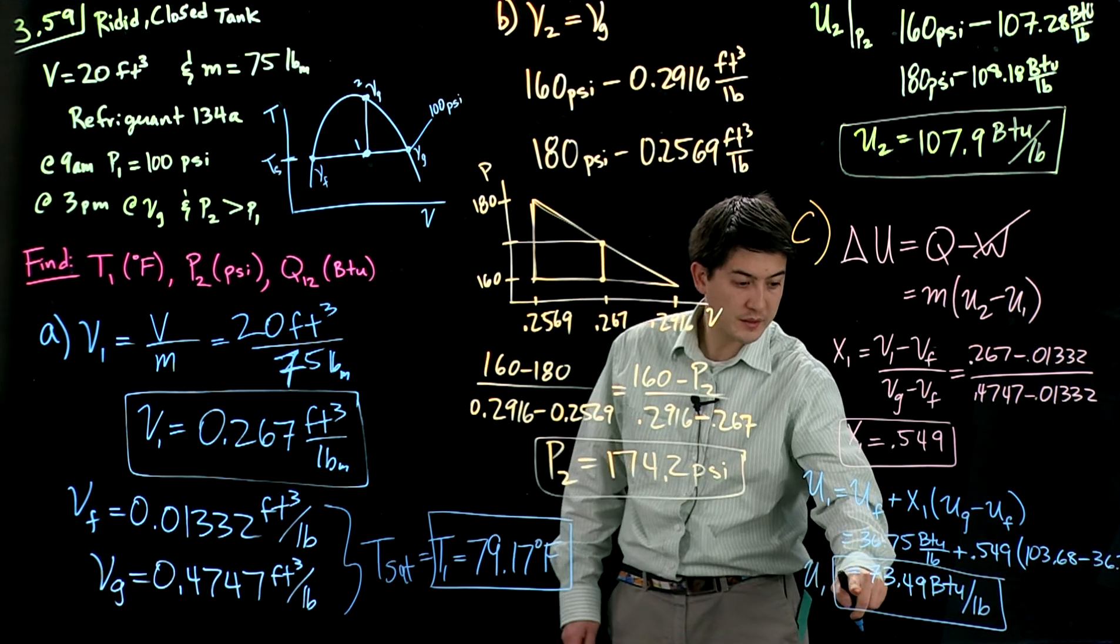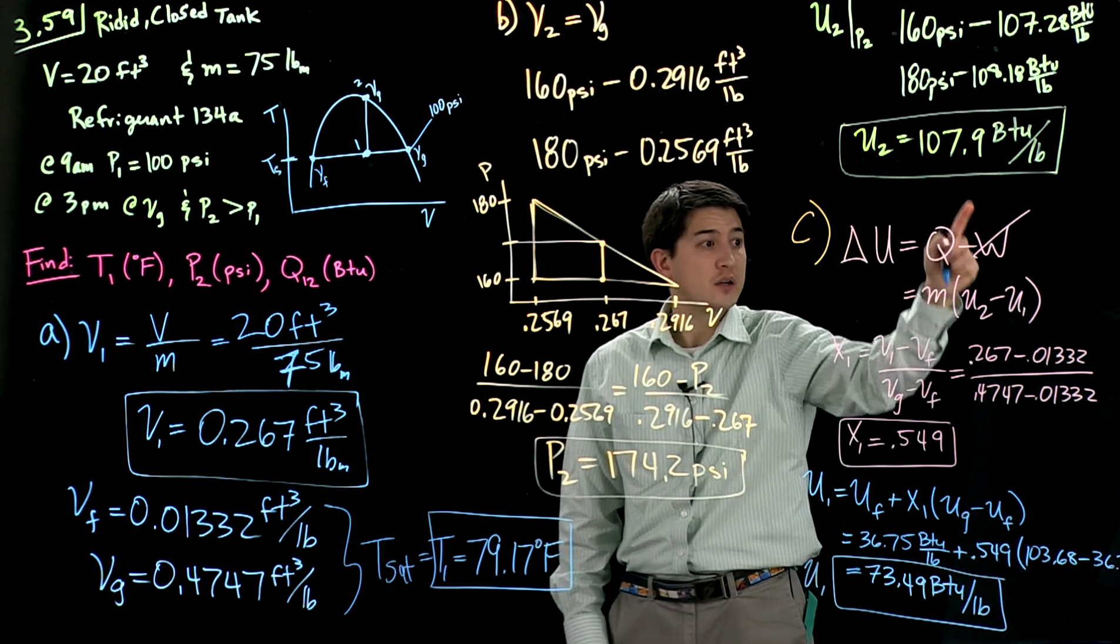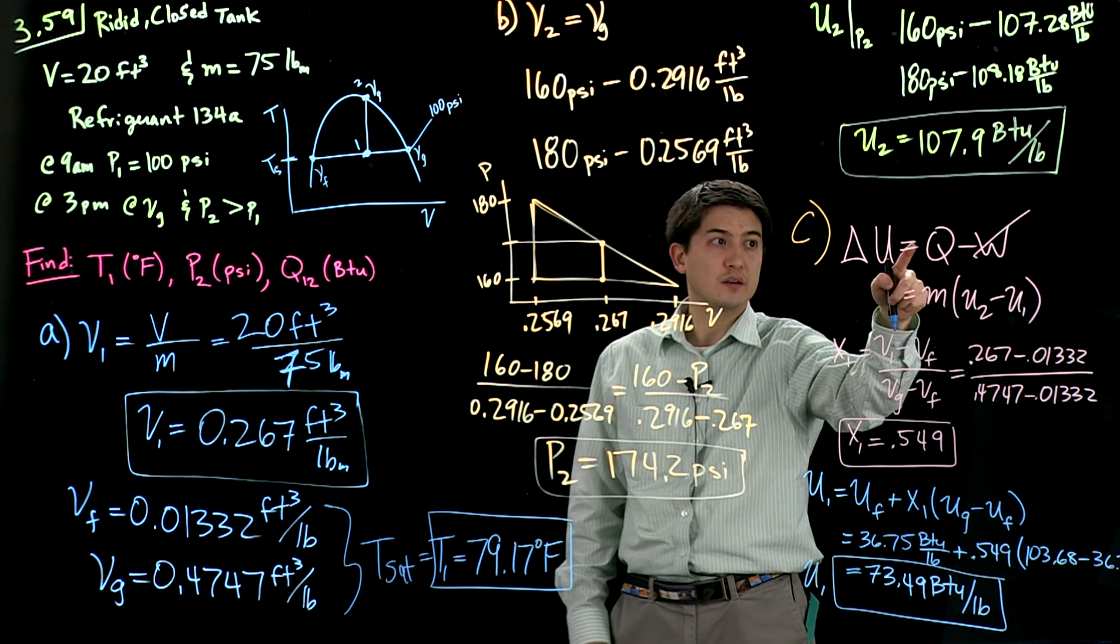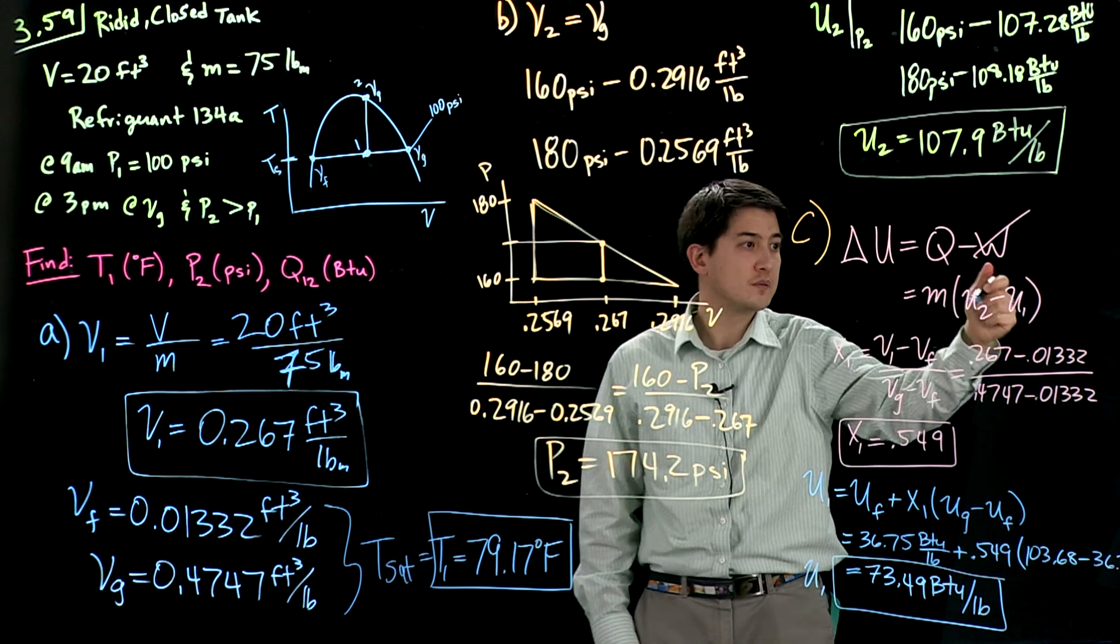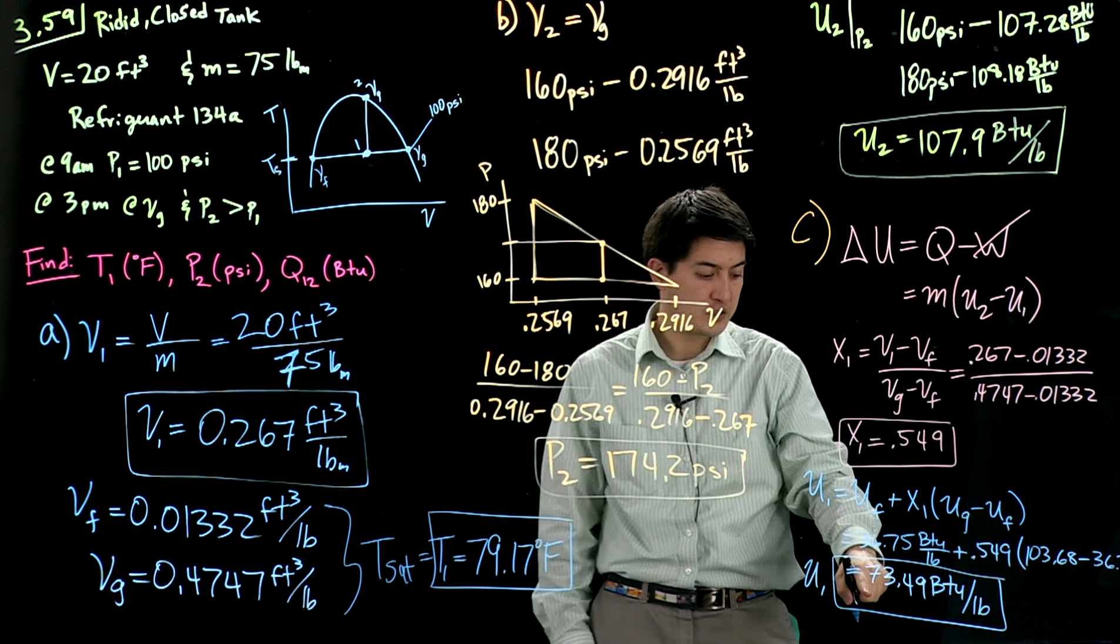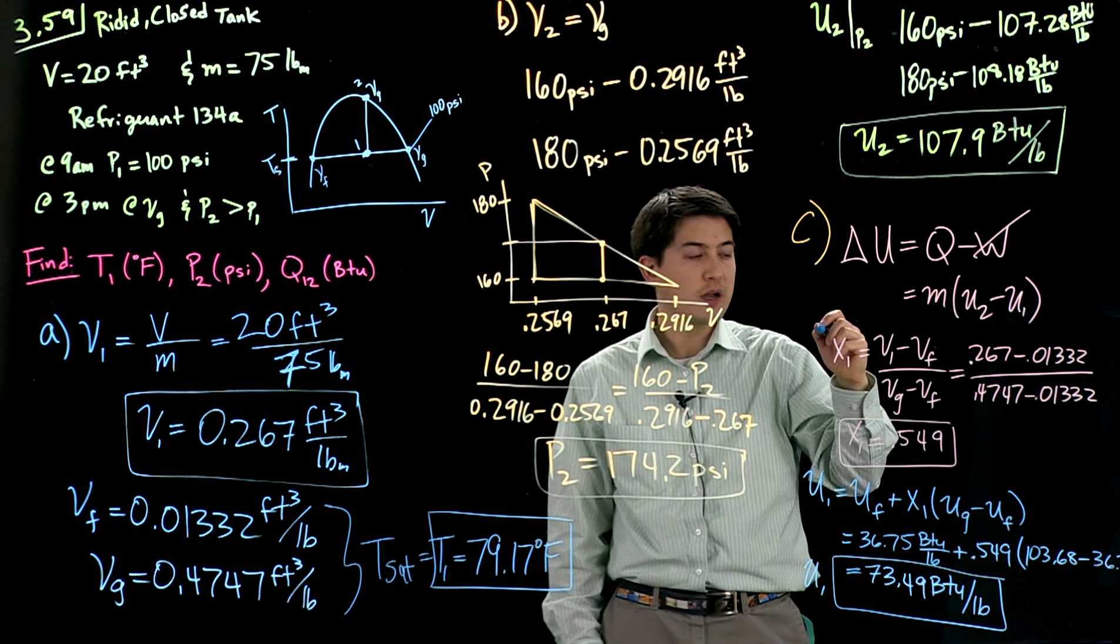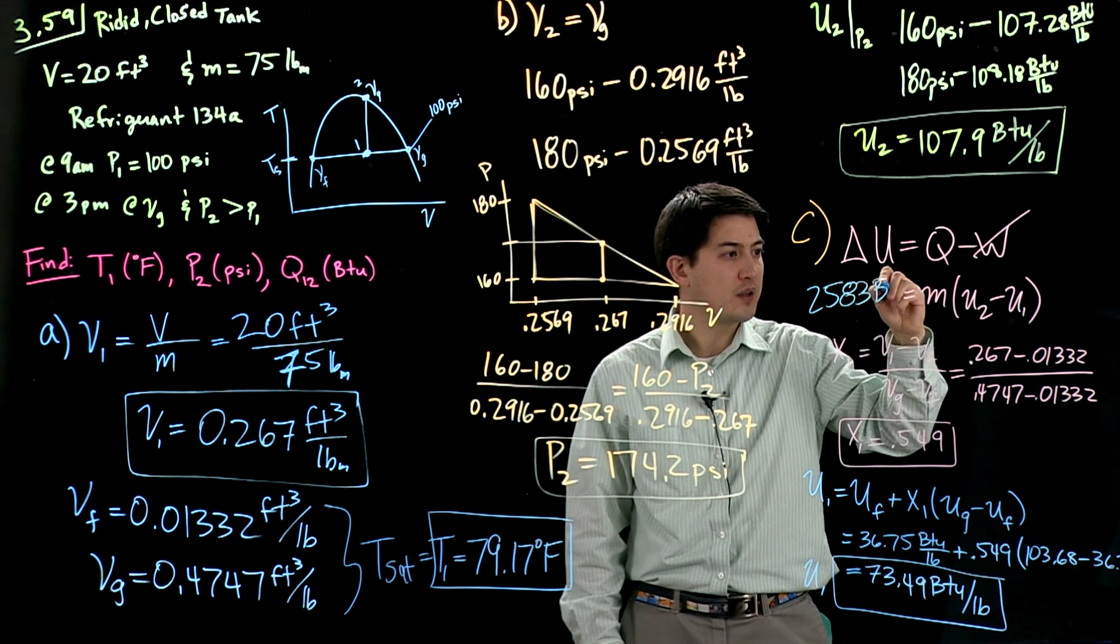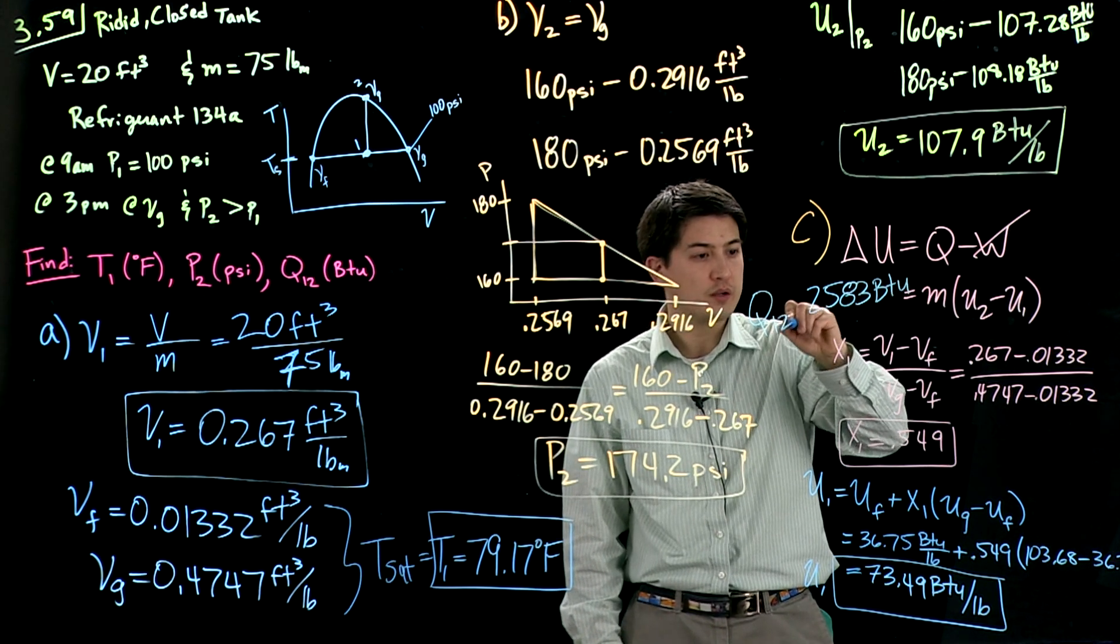We now have this. We have state 2 specific energy. We have the mass. We can plug these in. This will give us the heat from process 1 to process 2. I'm assuming that you can plug these in. That would give us 2,583 BTU for Q1 to 2.